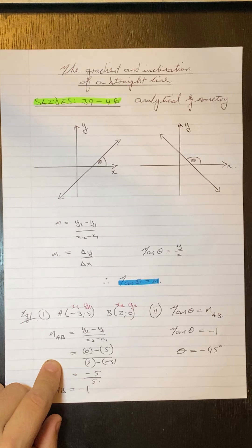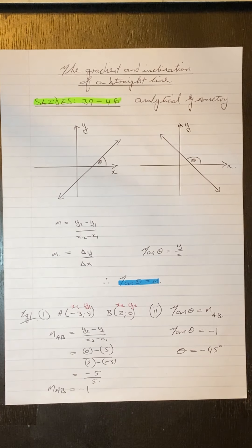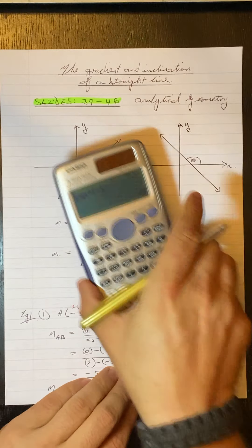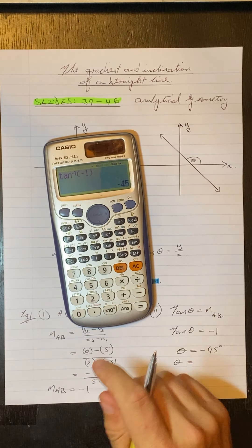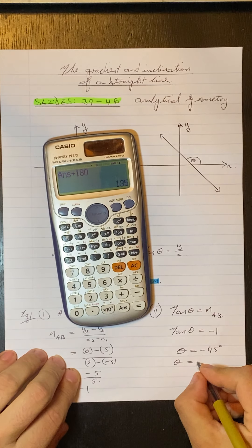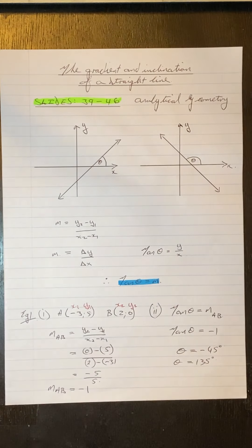Now, if you get a negative angle, grade 11s, you must add 180 to it in order to get a positive degree. So, if we add 180 to this, we get an angle of 135. And that is our angle of inclination for this line here.